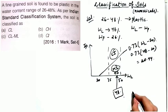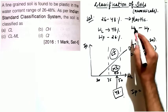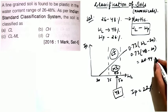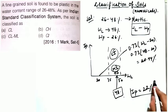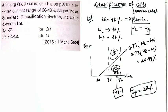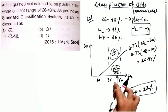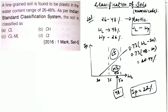Now calculate the actual plasticity index of the soil: IP = WL − WP = 48 − 26 = 22%. Since the soil's IP (22%) is greater than the A-line IP (20.44%), the soil lies above the A-line. In the intermediate plasticity region above the A-line, the soil is classified as CI — clay of intermediate plasticity.